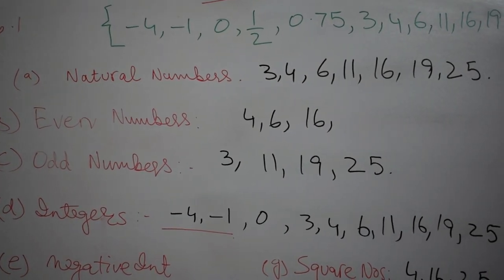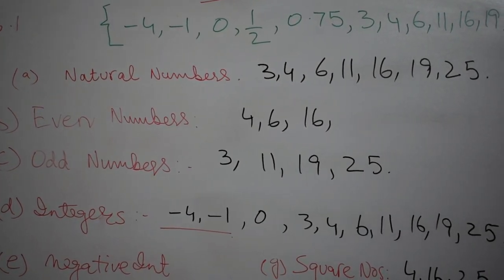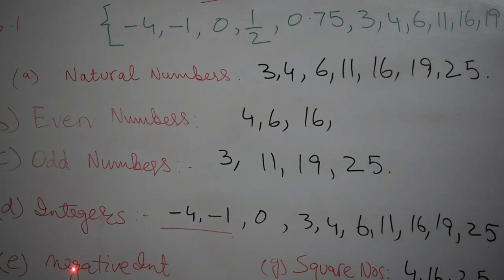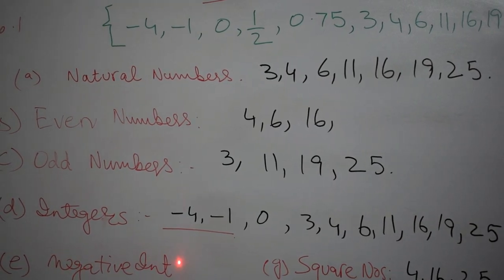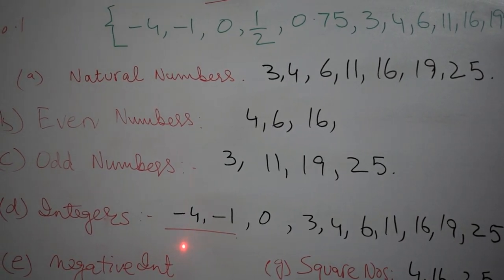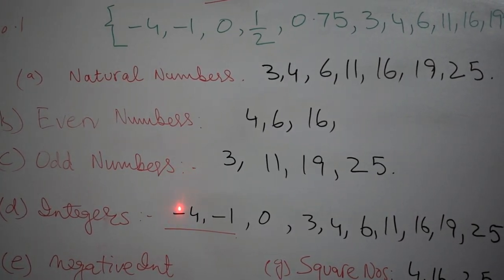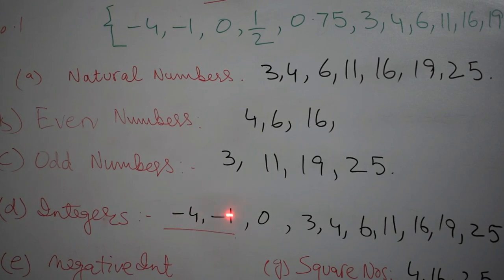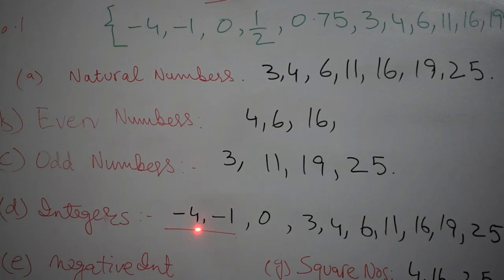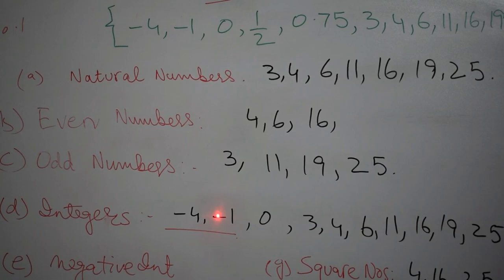And in the next part, he is asking about the negative integers. So the negative integers are only minus 4 and minus 1. I have underlined it. Minus 4 and minus 1.